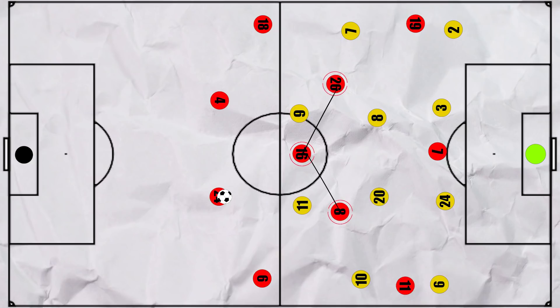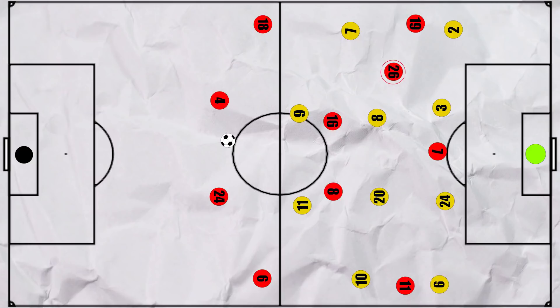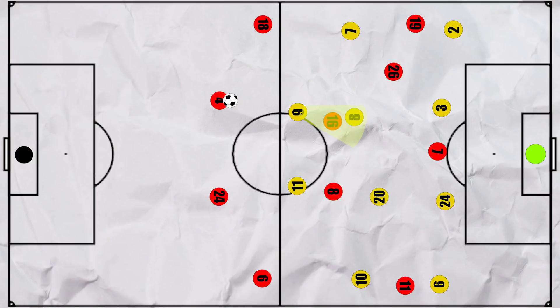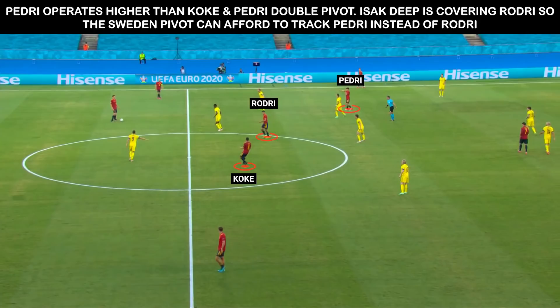Most of Spain's play did come down the left hand side. The Spanish midfield three often adjusted, with Rodri and Koke becoming the double pivot, allowing Pedri to move higher into the left half space. And here we see one of the advantages of Sweden sitting so deep. If Isak and Berg had been pushing onto the centre backs to press, Olsen would have had to pick between allowing Rodri time to pick up the ball past the first line of pressure, or allowing Pedri to have space between the lines. But with Berg deep and his cover shadow preventing the ball into Rodri, he could afford to track Pedri's movement much more.